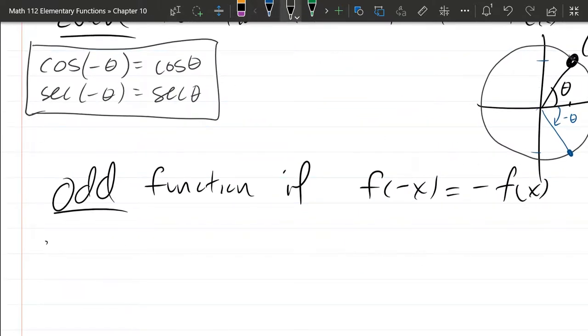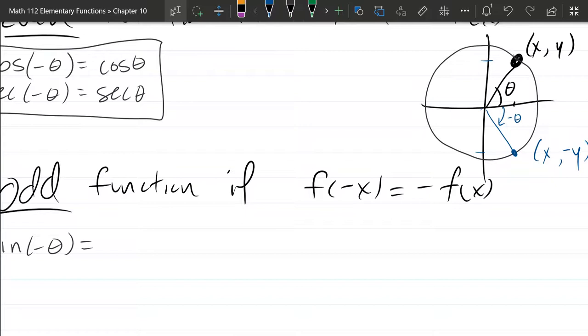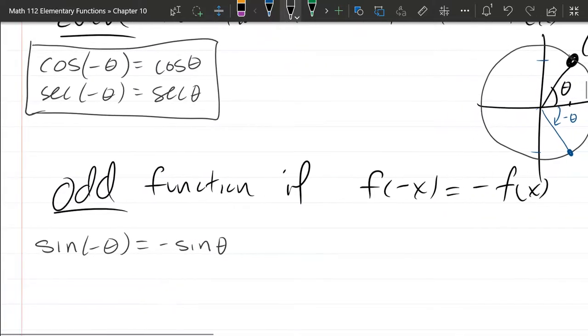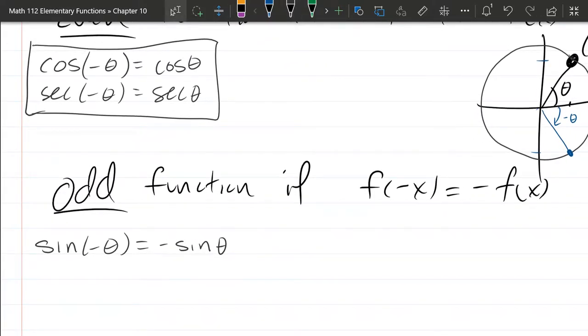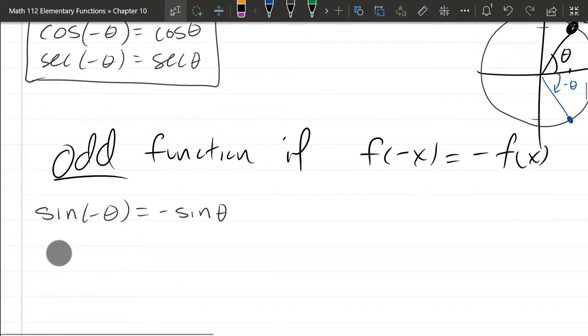So we have sine negative theta. If I rotate the wrong way, I'm going to get the opposite output. The output is going to change from positive to negative. So that means sine negative theta equals negative sine theta. The input changes sign. The output changes sign. The reciprocal cosecant also changes sign.